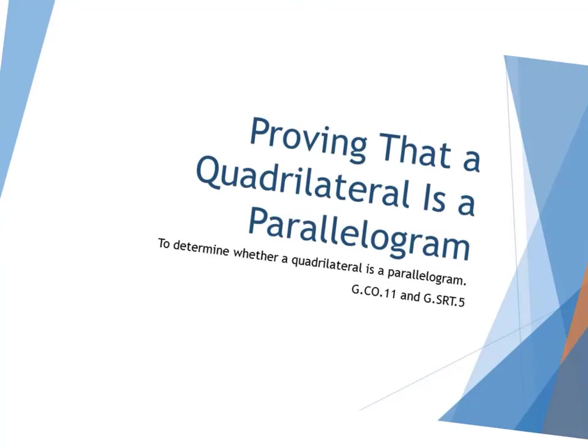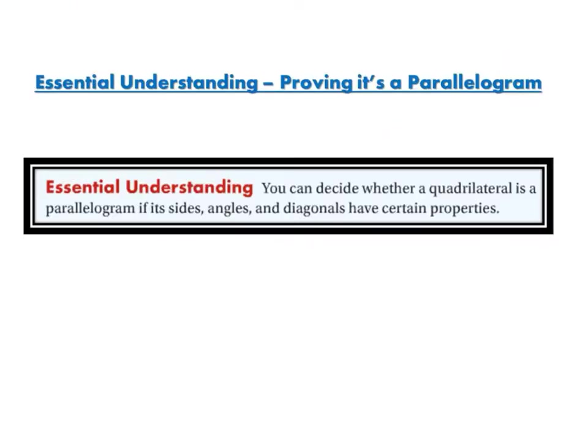This lesson is about proving that a quadrilateral is a parallelogram. The goal is to determine whether or not a quadrilateral is a parallelogram. The standards are Geometry Congruence number 11 and Geometry Similarity Right Triangles Trig number 5. By the end of this lesson, you should understand that you can decide if a quadrilateral is a parallelogram if its sides, angles, and diagonals have certain properties.